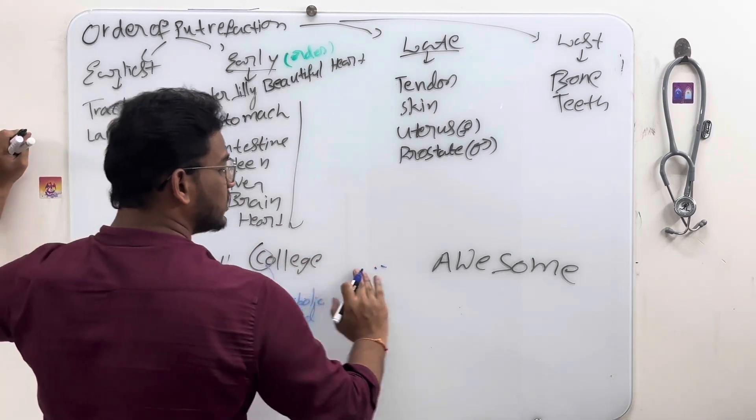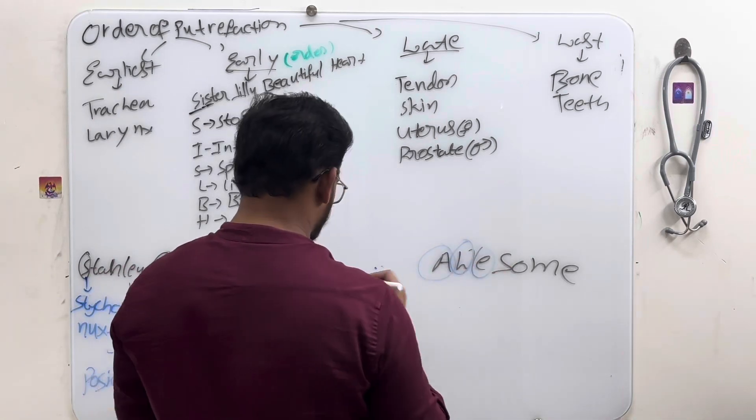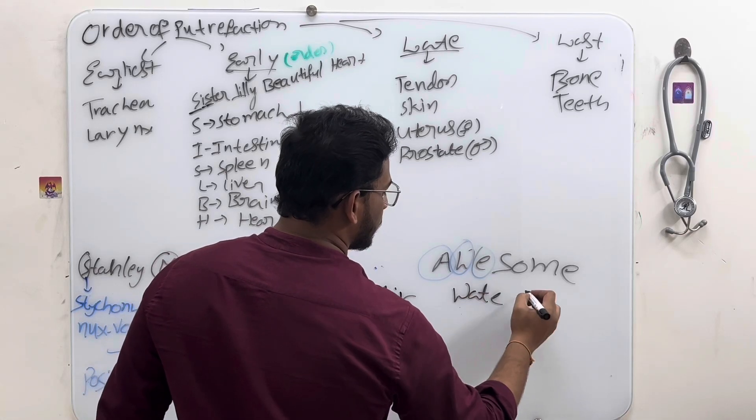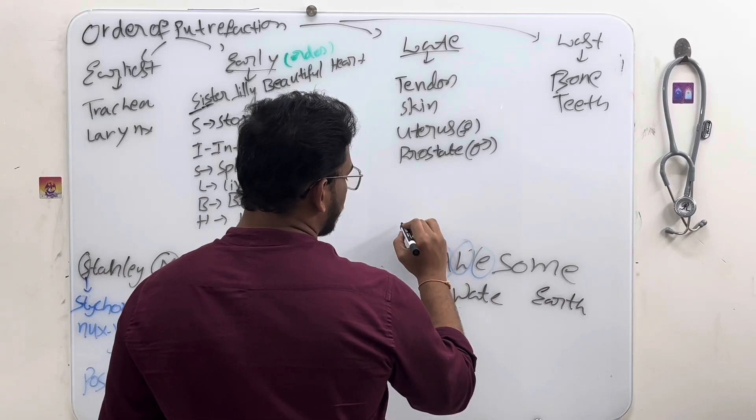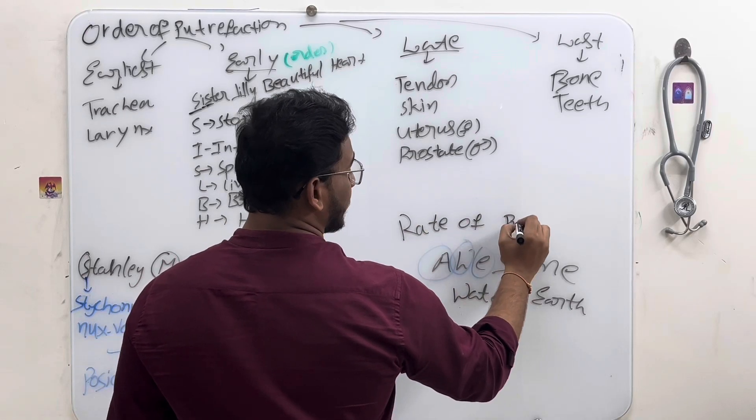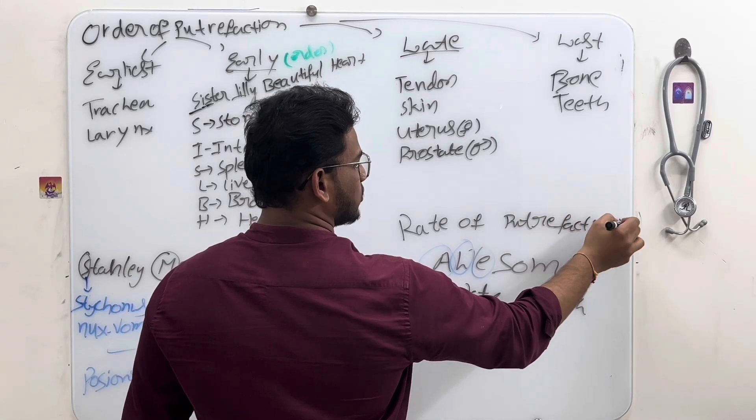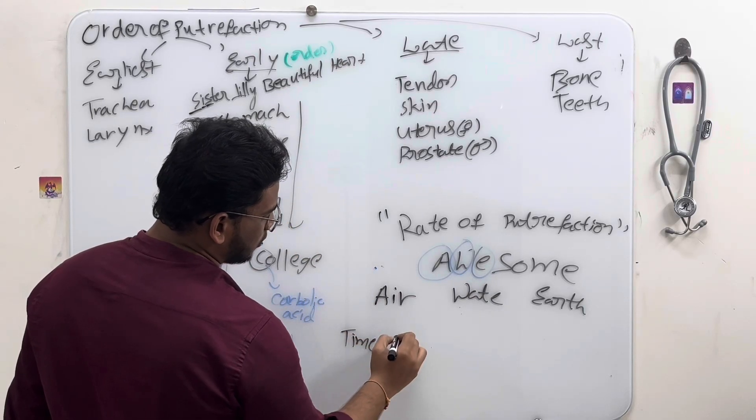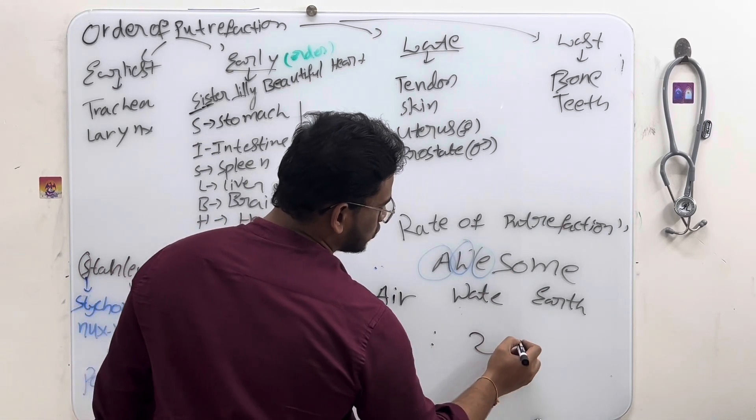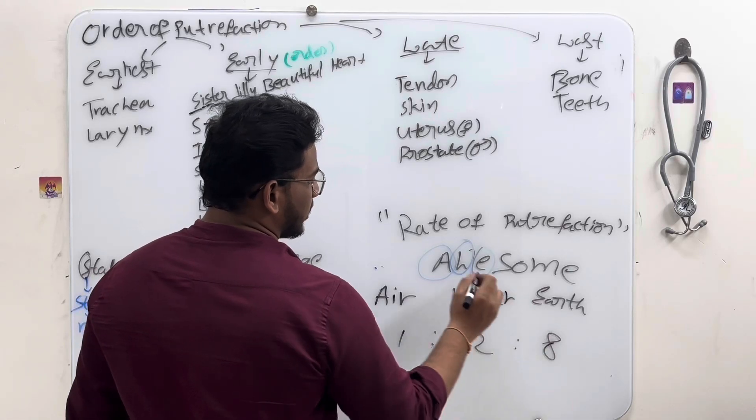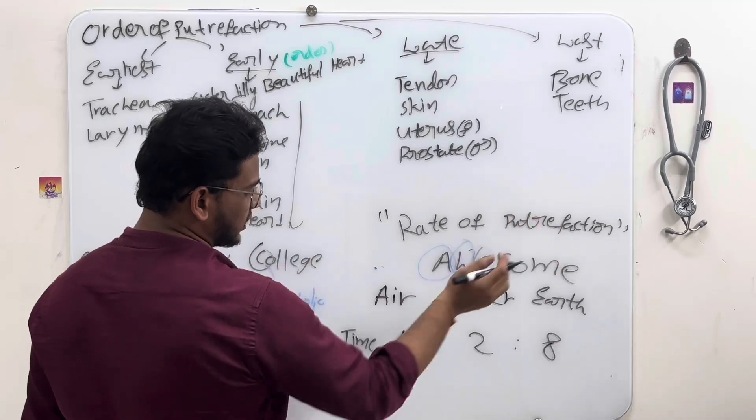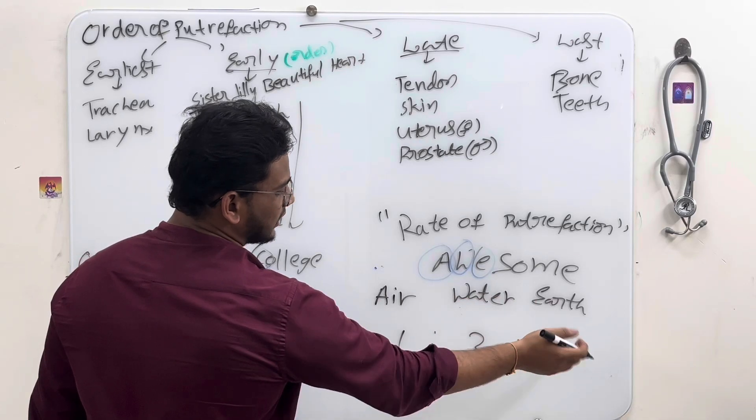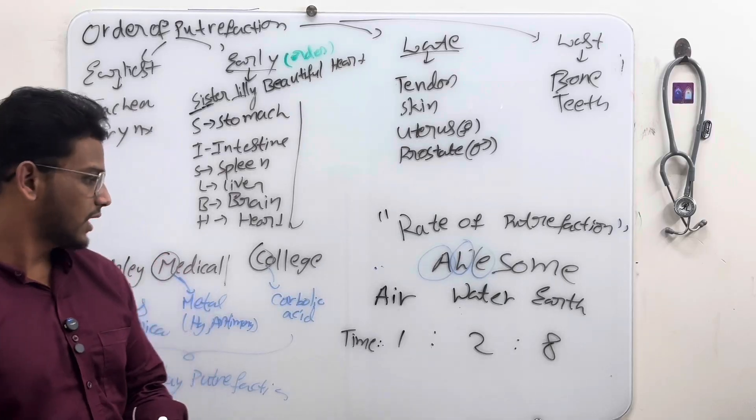Stanley Medical College is awesome, what is awesome? A for air, W for water, E for earth means soil. This is for rate of putrefaction. In air it will take one, in the ratio of 1:2:8. Suppose it will take one hour in air, it will take two hours in water, it will take eight hours in earth. This is all about putrefaction, thank you.